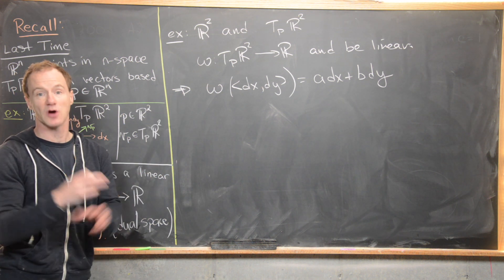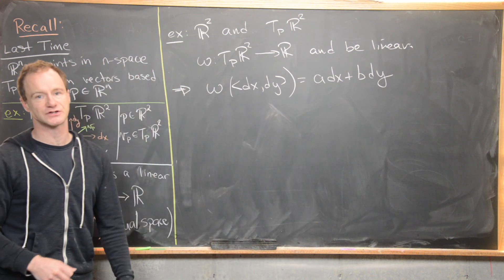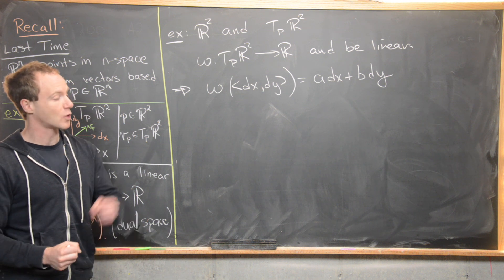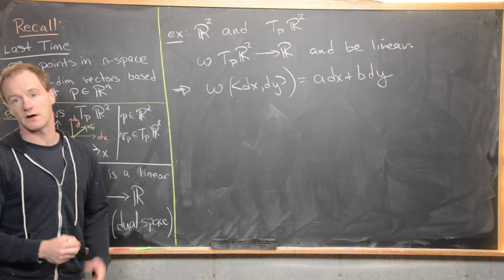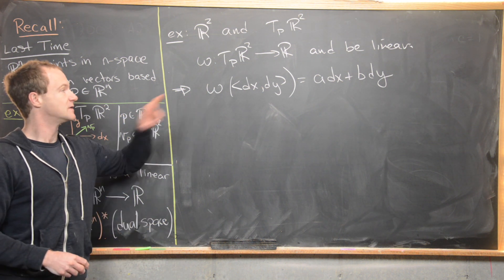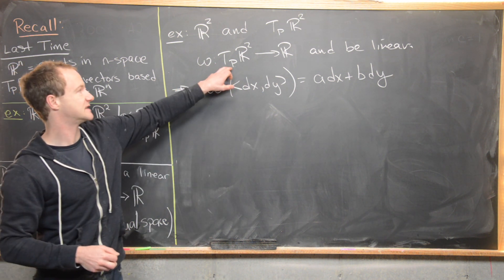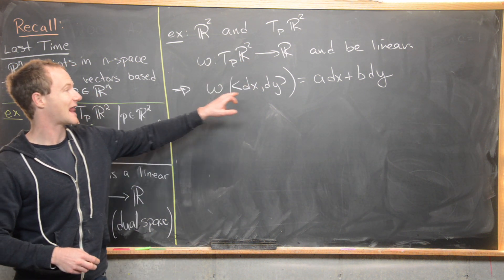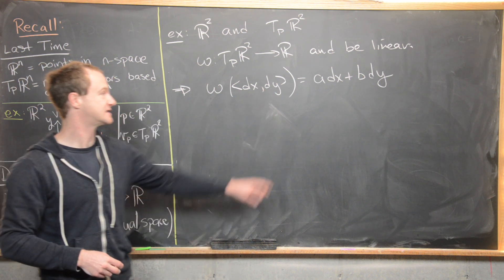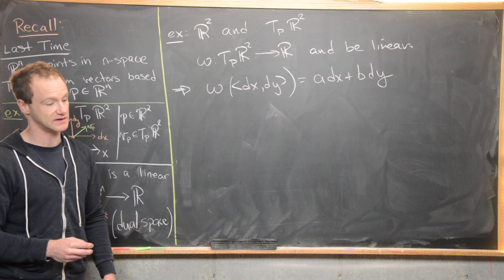Then the fact that this is linear means you just get a times dx plus b times dy. So already this is probably looking familiar from vector calculus. Notice a line integral over a vector field would have something like that. A line integral over a vector field more generally is an integral of a one-form. That's where we're going with this type of generalization. Since omega is a linear function from this tangent space up to the real numbers, we know it has to have this form. It has to take this element from the tangent space and turn it into just this number. Here we're thinking dx and dy are just numbers.